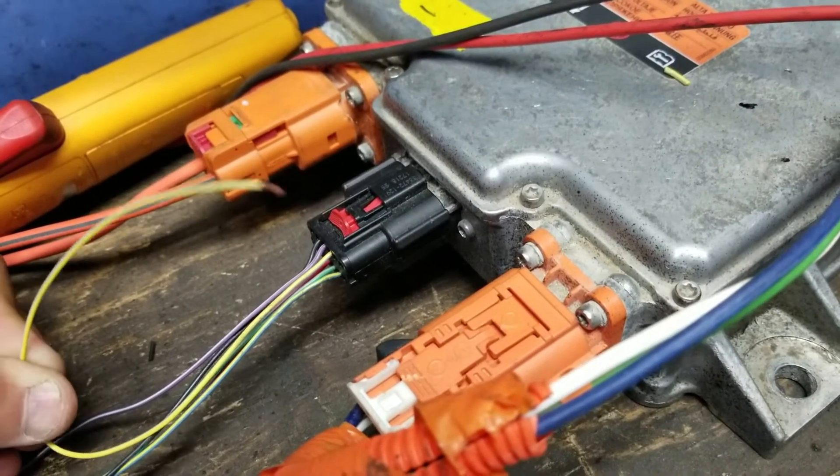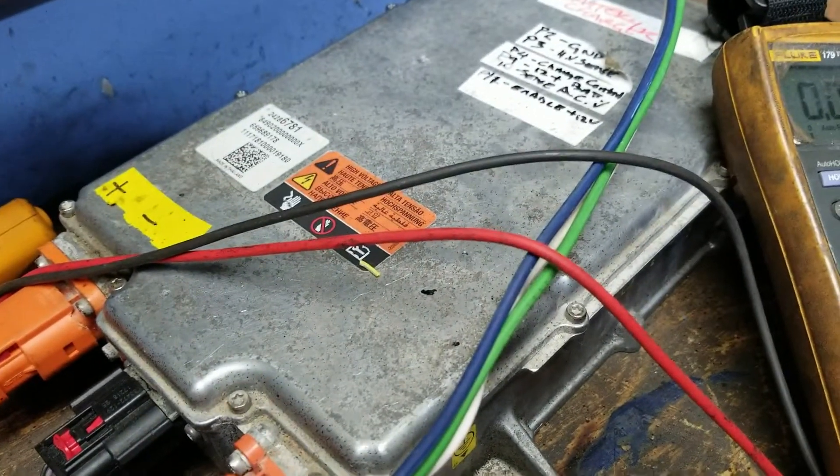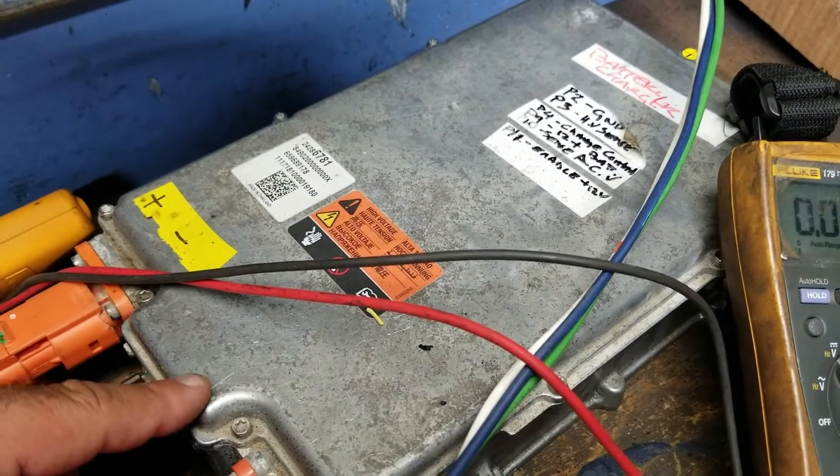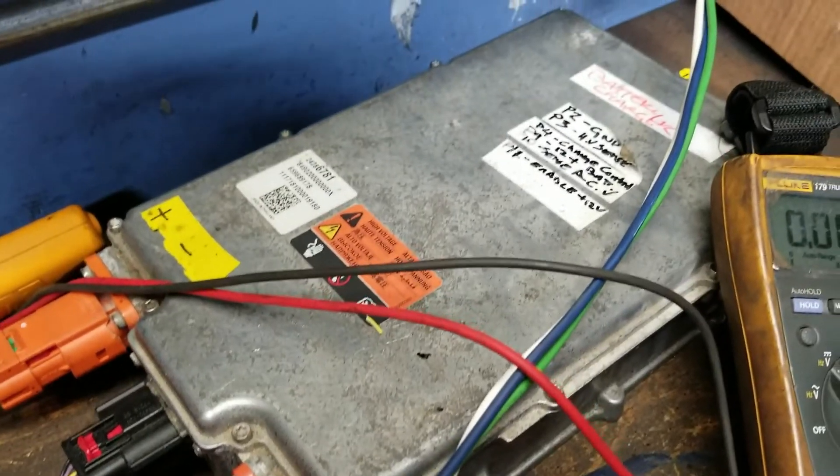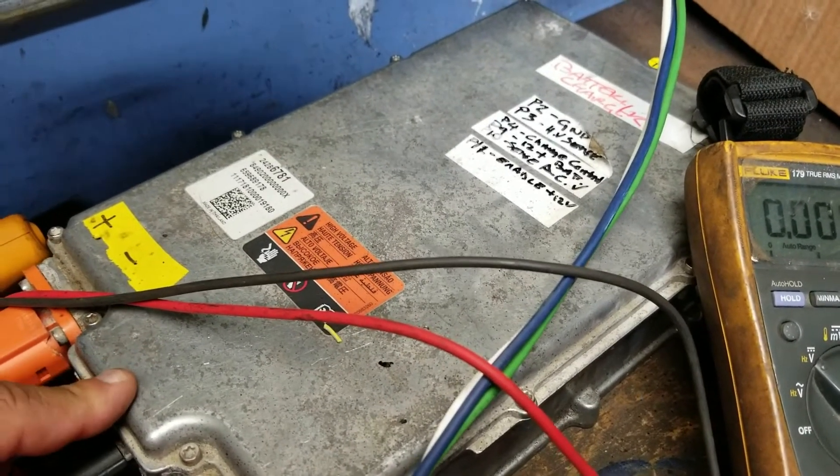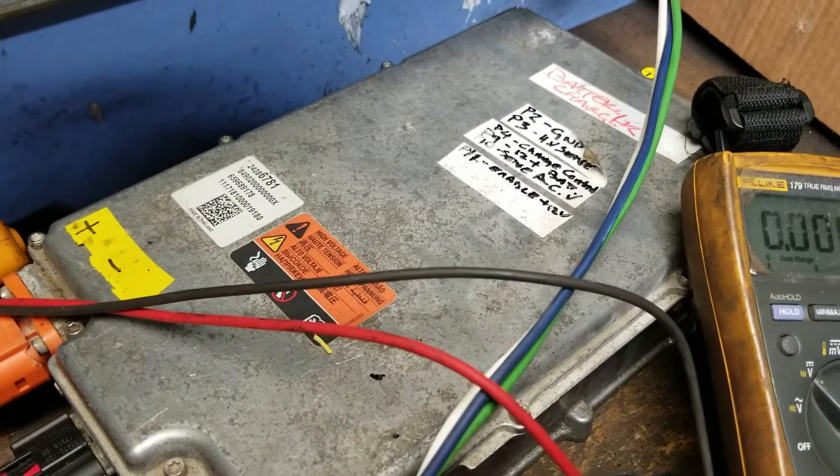Pin 4 is the pulse width modulation control, so by changing the duty cycle on this it changes the output of the battery charger. This is from a 2016 to 2020 Chevy Volt. The previous ones, gen ones, they work off of a CAN bus and I'm not familiar with CAN bus.